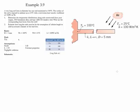Example 3.9. In this example we have a very long rod with a given diameter. One end is maintained at a constant temperature while the other one is exposed to the ambient air. Therefore it has convection heat transfer.